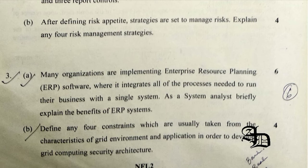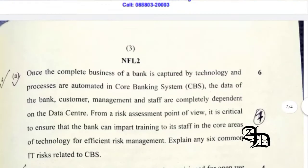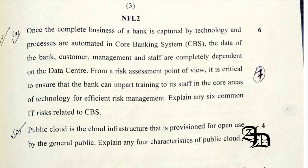Question 4A was related to explaining any 6 common IT risks related to CBS. These include authorization, ownership of property, authorization procedures and processes, and several software interfaces across a diverse network. We can also write about access controls and incident handling procedures.